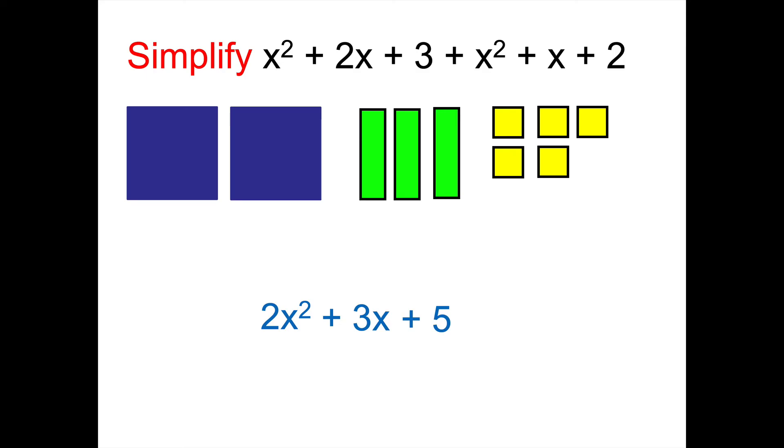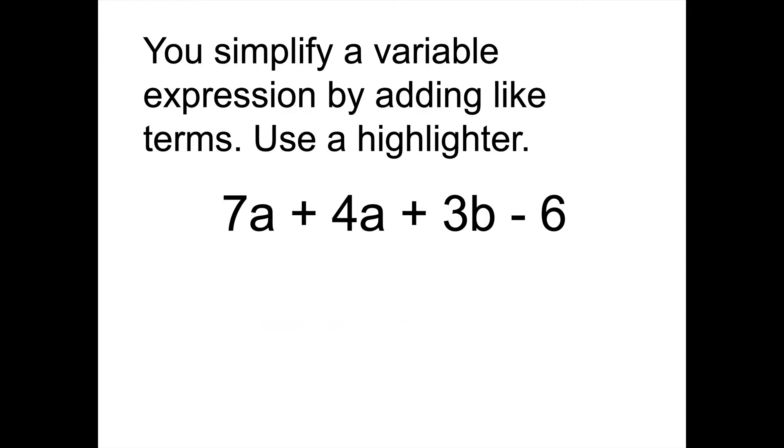All right, here's some practice ones for you. You can simplify a variable expression, otherwise known as an algebraic expression, by adding the like terms, the ones that have the same variable. So we're going to use the highlighter method now instead of using algebra tiles. So I'm going to highlight my a terms with one color, my b terms with another color, and my constants.